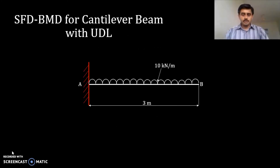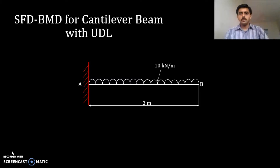Consider this example: a cantilever beam with a fixed support at end A, a span of 3 meters, carrying a UDL of 10 kN per meter. The free end is B.